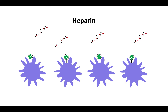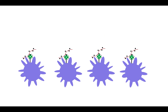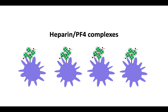Heparin has a strong negative charge density. Thus, positively charged PF4 binds negatively charged heparin and neutralizes it, forming heparin-PF4 complexes on the platelet surface. These ultra-large complexes form most efficiently with unfractionated heparin and ten times less efficiently with low molecular weight heparin. This accounts for the greater incidence of HIT in patients receiving unfractionated heparin compared with low molecular weight heparin.